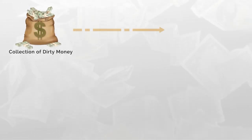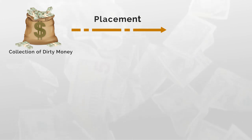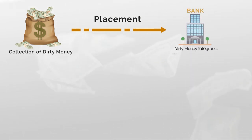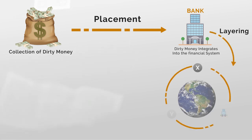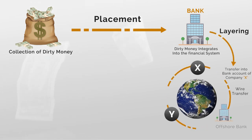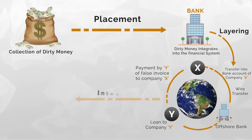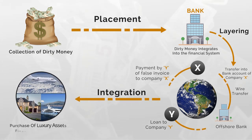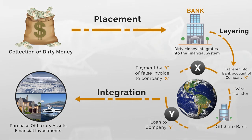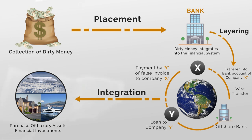Let's summarize the process of money laundering. In the first stage of placement, the money is placed into various bank accounts or financial institutions. Then this money gets layered through wire transfers, bank deposits, offshore bank accounts, and trade-based methods. From there, the next stage is integration, wherein the money is used to purchase luxury assets, or for financial investment, commercial, and industrial investment. This is a typical money laundering process.